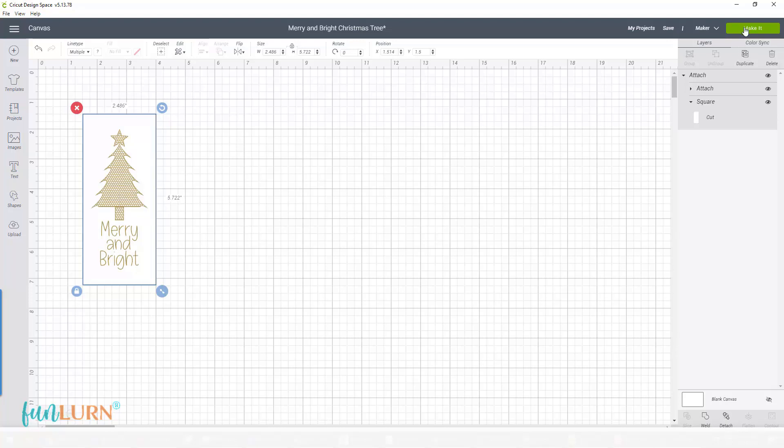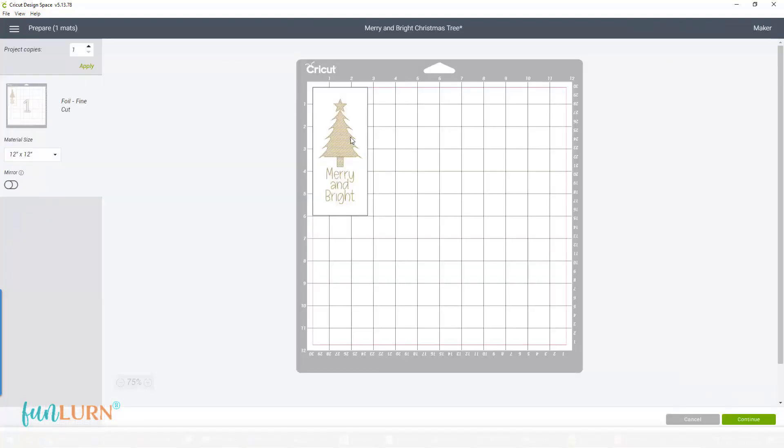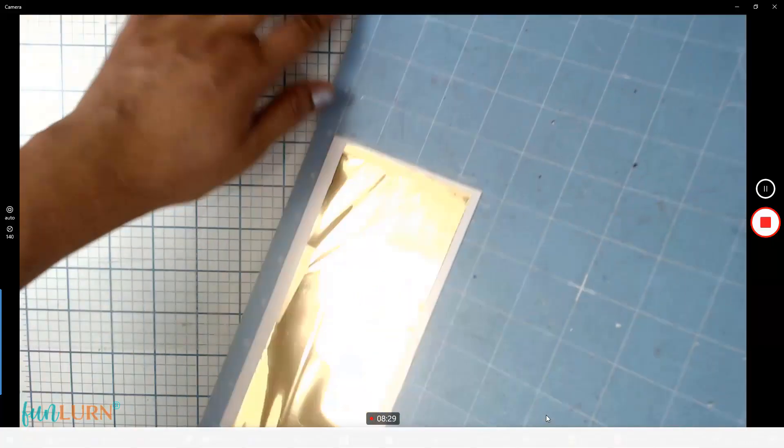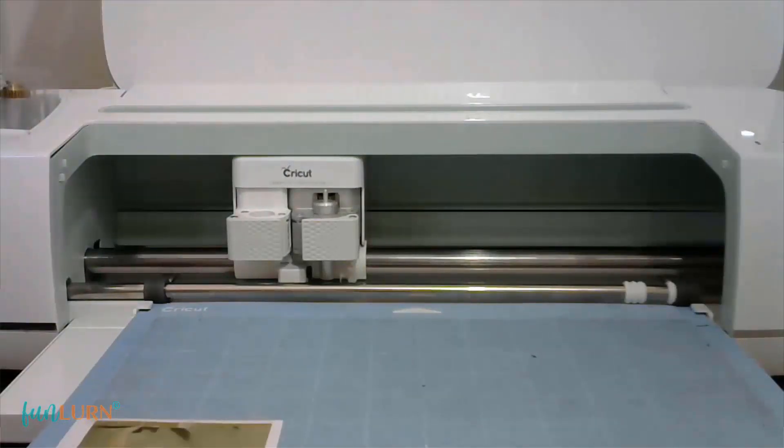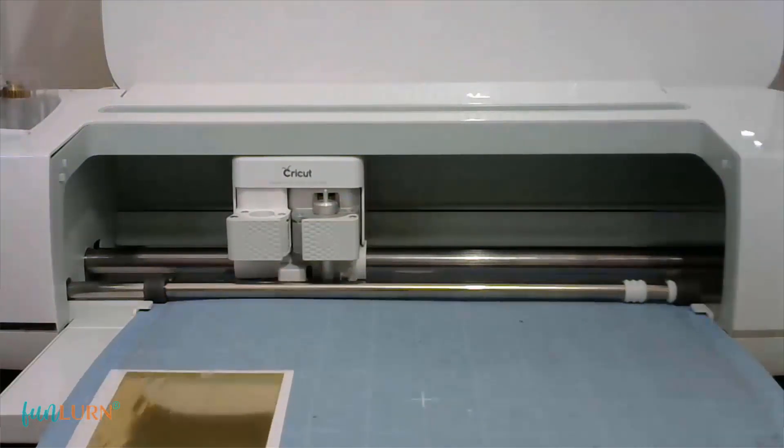And then I'm going to click Make It. Now I'm going to position the design on the mat where I have placed my cardstock and foil on the cardstock. Once I'm satisfied by checking the exact square locations, I'm going to insert the mat in Cricut Design Space and press the arrow button.